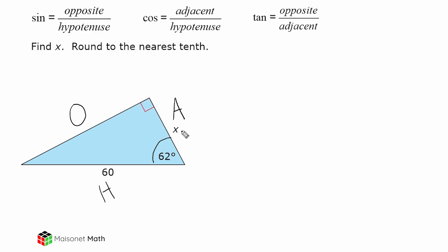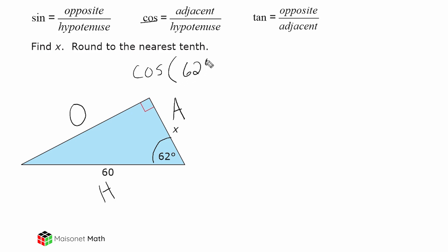They give us x and they give us 60, so we have to use adjacent and hypotenuse. The ratio we would use to find side x is cosine, because cosine equals the adjacent length divided by the hypotenuse. So we write: cosine of 62 degrees is equal to the adjacent side, which is x, over the length of our hypotenuse, which is 60.